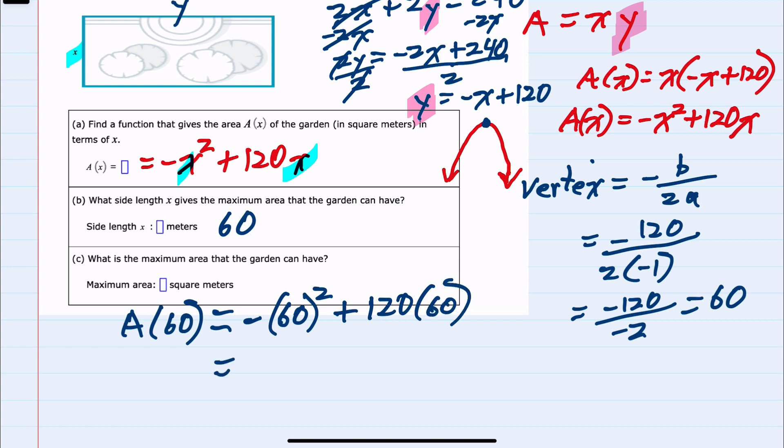And now we can simplify, 60 squared is 3,600, plus 7,200, would be 120 times 60, and then when we combine these two, negative 3,600 plus 7,200, would be a positive 3,600. So the maximum area is 3,600 square meters, which is the value we got in the area function when we plugged in our 60 meters.